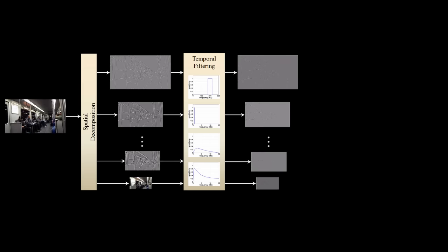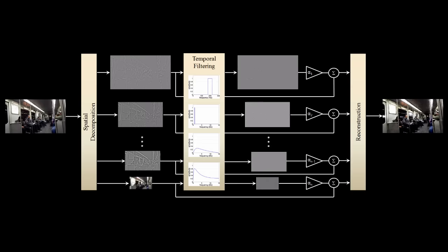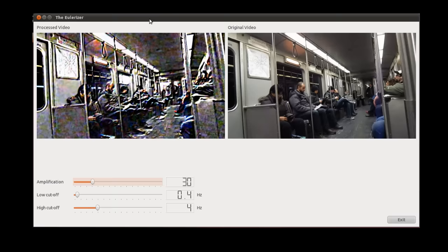The resulting signal is then amplified and added back to the original frames, and the pyramid is collapsed to generate the output video. Our technique can be run in real time, essentially serving as a microscope for temporal variations.